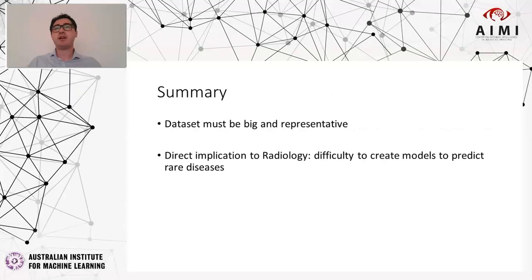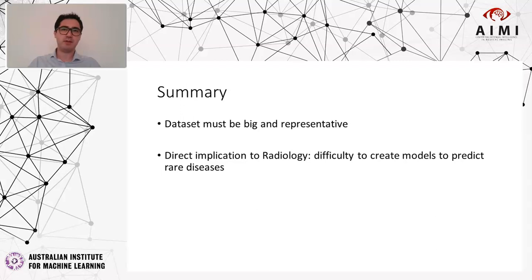So in summary, in this lecture I wanted to show that data sets for machine learning must be big and also they must be representative of what the distribution of imaging findings may be. There is also a direct implication to radiology, which is the difficulty to create models to predict rare diseases.